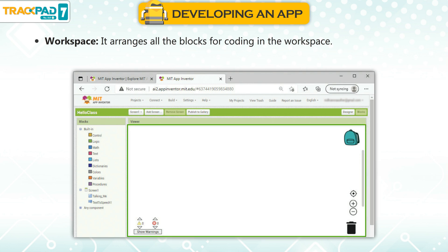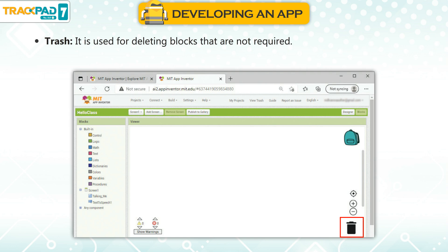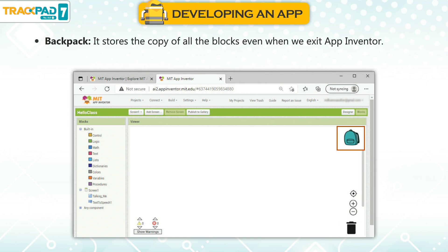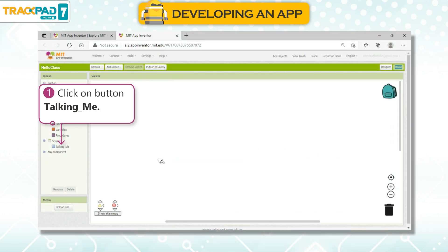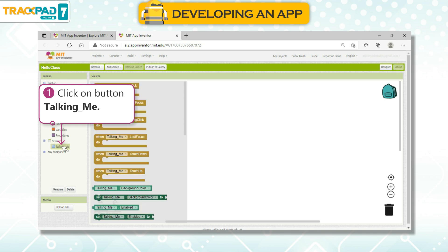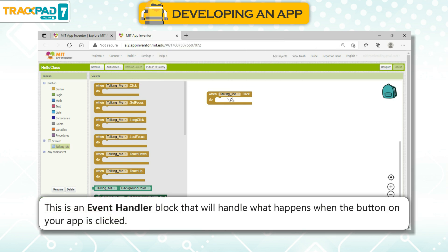The Workspace arranges all the blocks for coding. The Trash is used for deleting blocks that are not required. The Backpack stores a copy of all the blocks even when we exit App Inventor. Making a click event for a button: click on the TalkingMe button, drag and drop the 'when TalkingMe Click do' block and drag and drop it to the workspace. This is an event handler block that handles what happens when the button on your app is clicked.